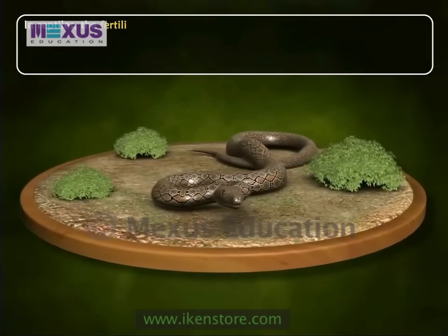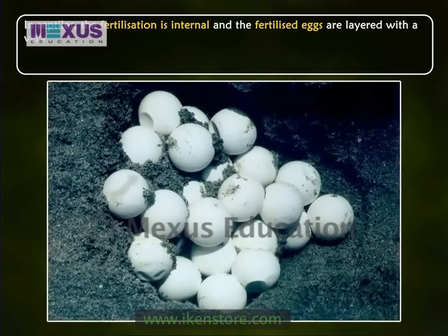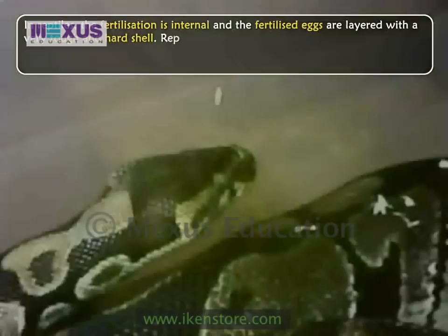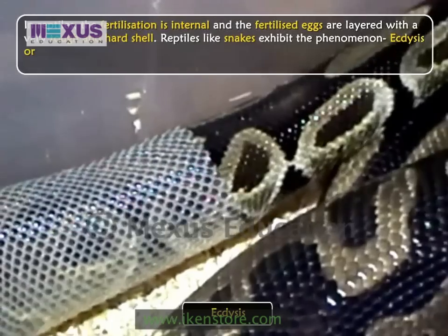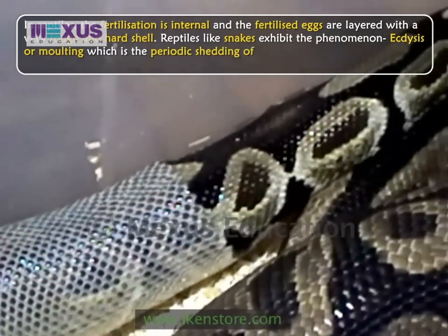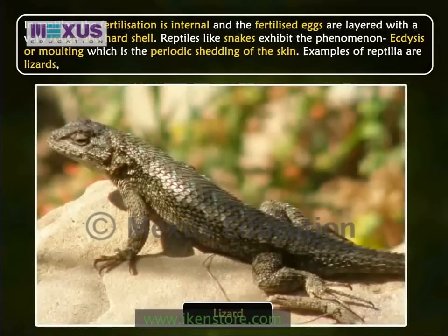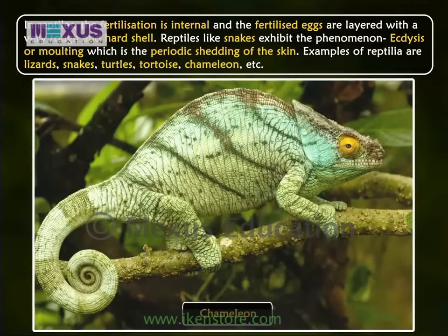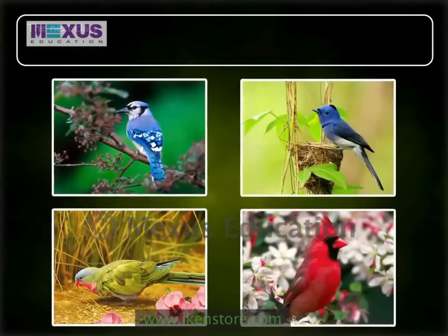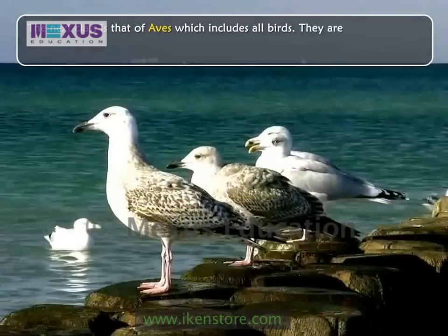In reptiles, fertilization is internal and the fertilized eggs are layered with a very tough and hard shell. Reptiles like snakes exhibit the phenomenon of ecdysis, or molting, which is the periodic shedding of the skin. Examples of Reptilia are lizards, snakes, turtles, tortoise, etc.